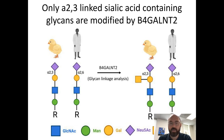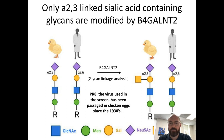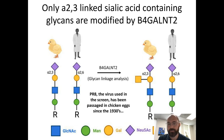This actually makes sense given that the virus we used for the screen was a laboratory-adapted H1N1 virus called PR8, which was initially isolated from a person but has been passaged in chicken eggs since the 1930s and has acquired a preference for the alpha-2,3 linkage. These data suggest we would strongly restrict avian viruses but not human strains.